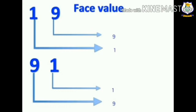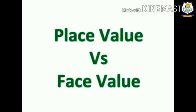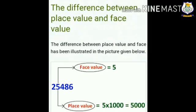The face value is the same as the digit itself and does not change by changing the place. Now let's see the face value of 1 and 9 in 19 and 91. The face value of 1 and 9 is the same as the digit itself. Now let's see the difference between place value and face value, illustrated in the picture below.